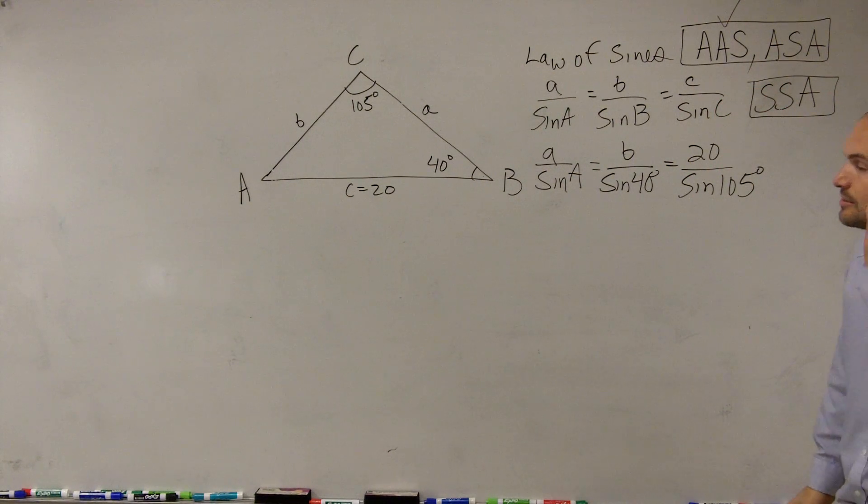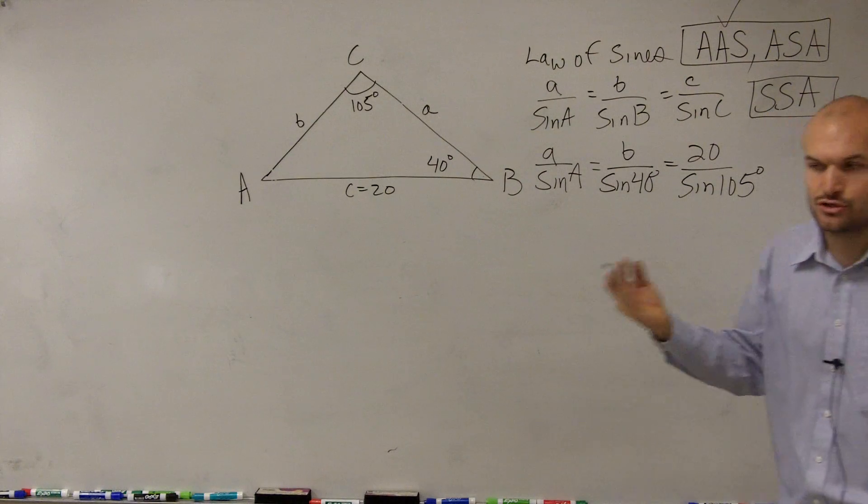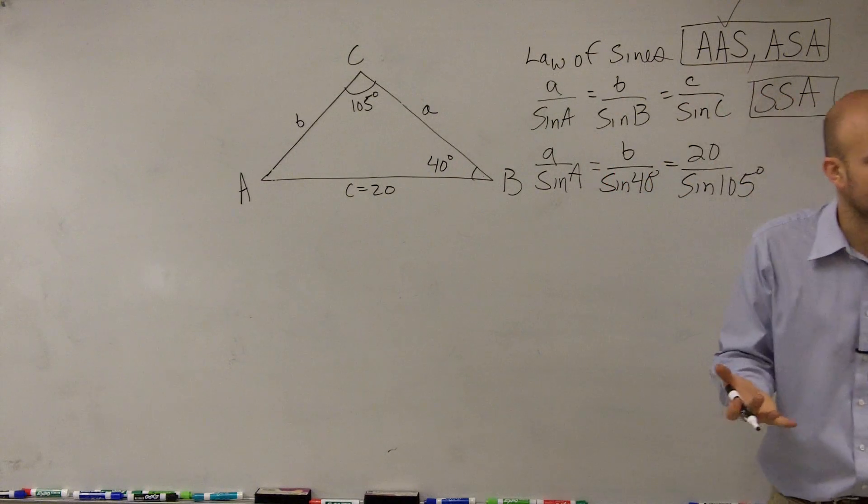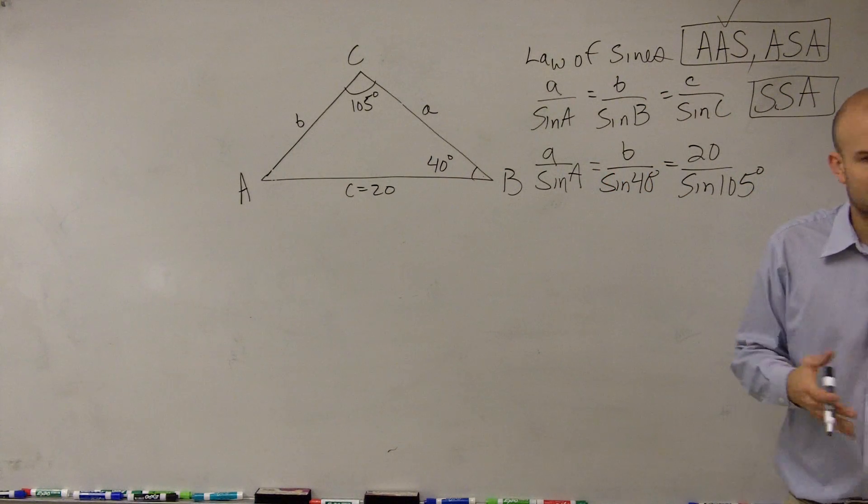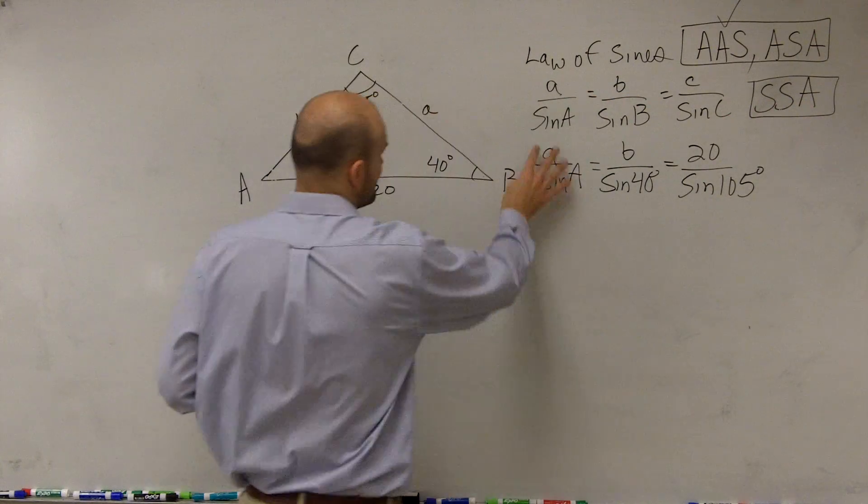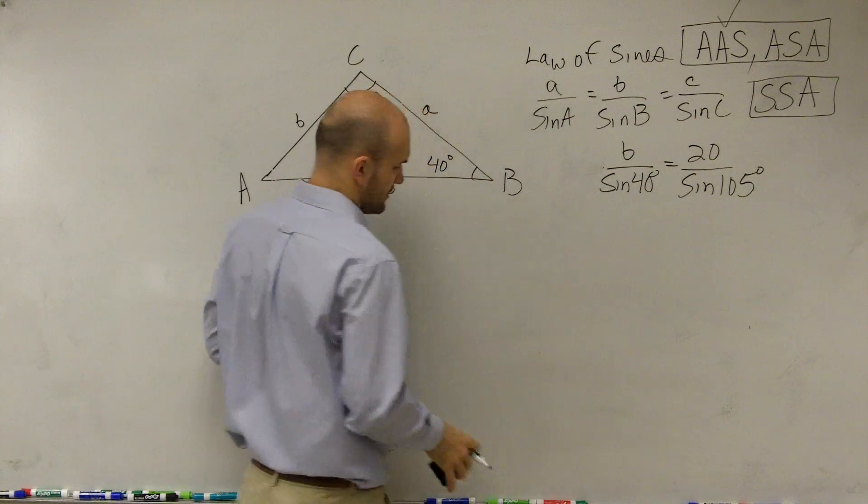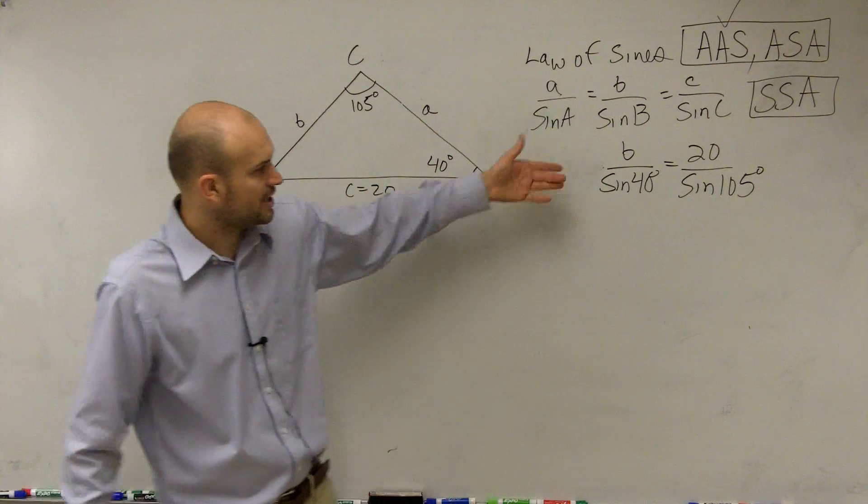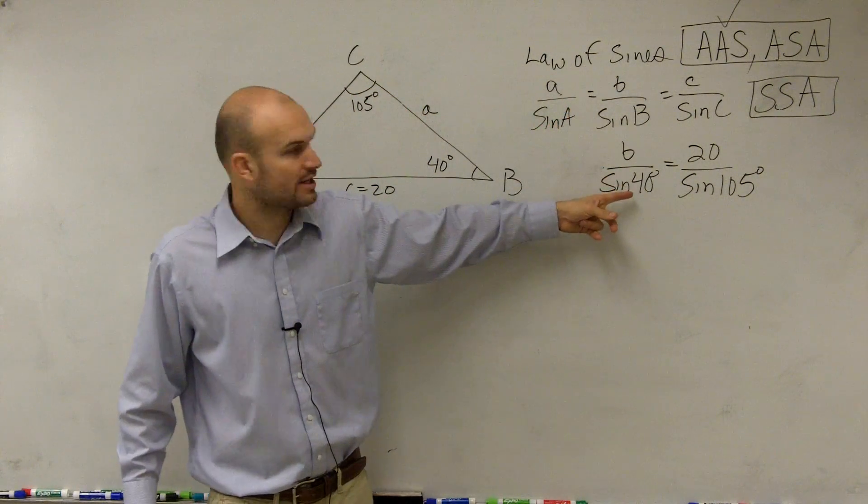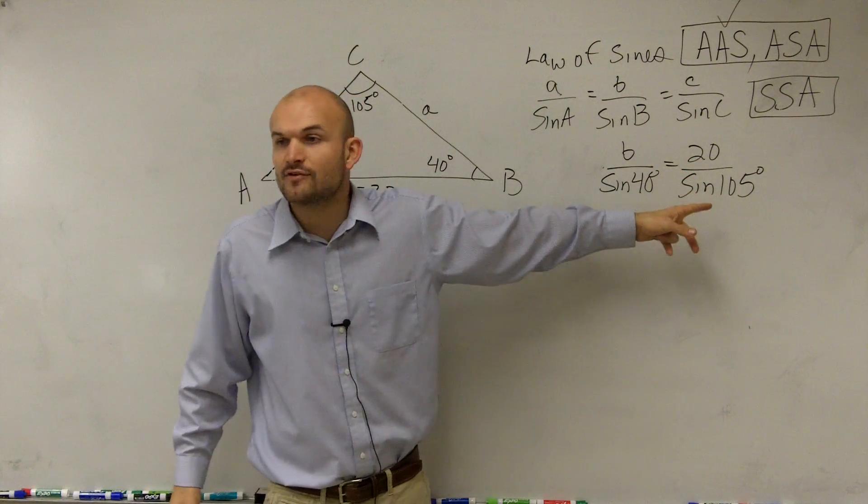So ladies and gentlemen, when completing the law of sines, we don't need all three of these ratios. All we need is two ratios to complete a proportion. Then once we have a proportion, we can solve from there. So since I have no information for a over sine of A, I'm just going to kind of erase it right now. And let's just look at the proportion. b over sine of 40 equals 20 over sine of 105.